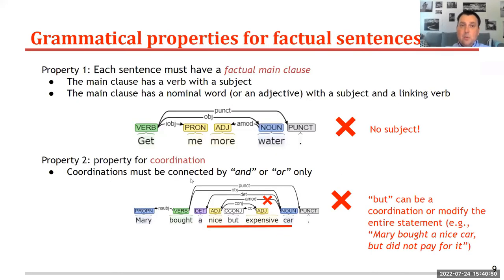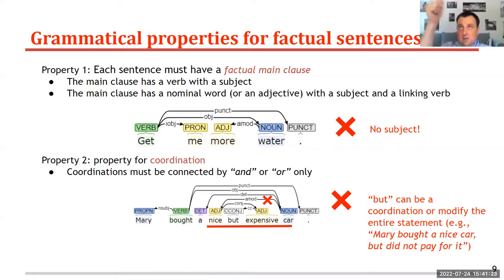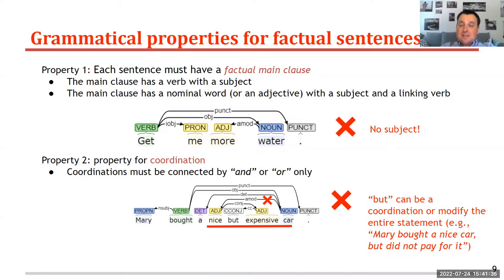The grammatical properties for factual sentences are as follows. First, each sentence must have a factual main clause. Factual main clauses are those where the main clause has a verb with a subject, or has a nominal word or an adjective with a subject and a linking verb. We only accept sentences where at the highest level — the root of the dependency parse tree — is the verb of the sentence and it has a subject. For example, we don't accept commands like 'get me more water', where the verb has no subject but has two objects.